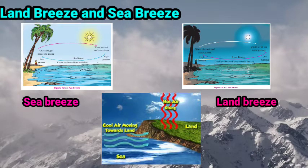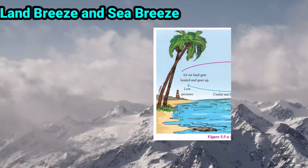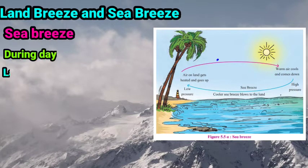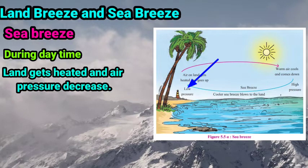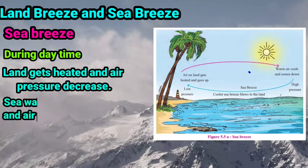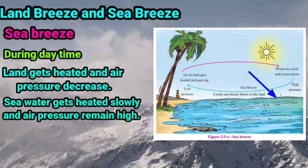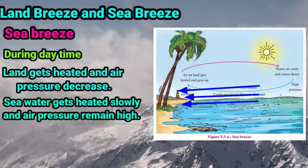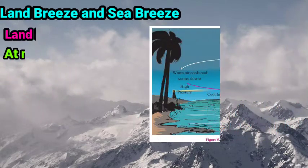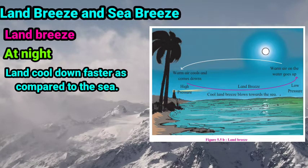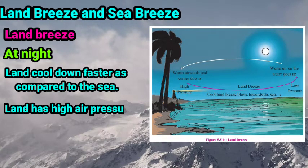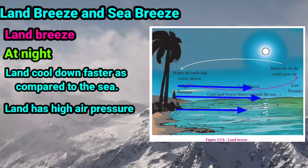Let's see how this situation affects the wind. In the coastal area, land gets heated during the daytime. Hence, the air on the land also gets heated and the air pressure on the land decreases. Comparatively, the sea water gets heated slowly, hence the air is less heated and the air pressure remains high. Therefore, the winds blowing from the sea towards the land are called sea breeze. At night, the land cools down faster compared to the sea and therefore has a higher air pressure, hence the land breeze blows from the land towards the sea. This is how the land breeze and sea breeze are generated at the coastal area.